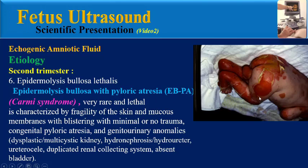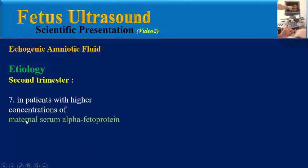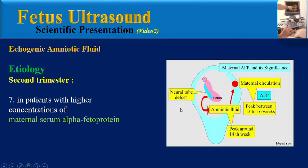This includes blistering of skin and mucous membranes, congenital pyloric atresia, and genitourinary anomalies. Additionally, patients with higher concentrations of maternal serum alpha-fetoprotein may show echogenic amniotic fluid.